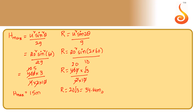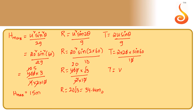Let us also calculate the time of flight. T = 2u·sinθ / g. Therefore, T = 2 × 20 × sin60° / 10 = 4 × sin60° = 4 × (√3/2) = 3.46 seconds.